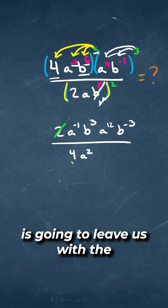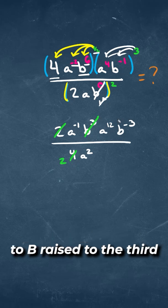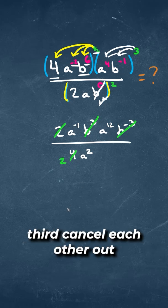2 over 4 is going to leave us with a 2. B raised to the 3rd times B raised to the negative 3rd cancel each other out.